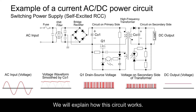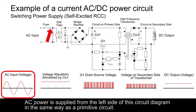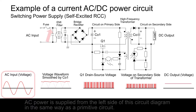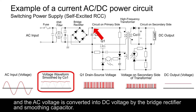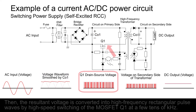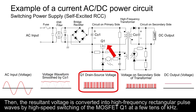We will explain how this circuit works. AC power is supplied from the left side of this circuit diagram, in the same way as a primitive circuit. Common mode noise is removed by the EMI filter, and the AC voltage is converted into DC voltage by the bridge rectifier and smoothing capacitor. Then, the resultant voltage is converted into high frequency rectangular pulse waves by high speed switching of the MOSFET Q1 at a few tens of kilohertz.